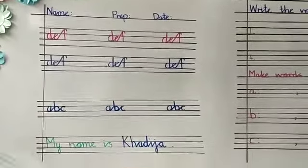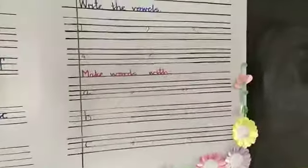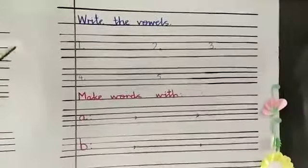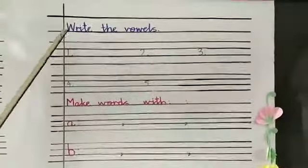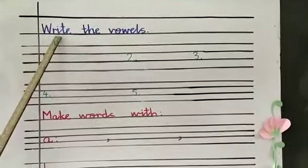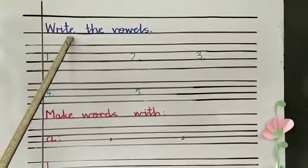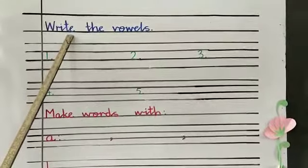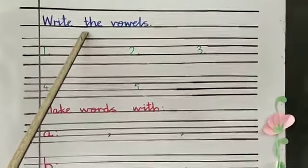Now turn the sheet. This is the other side. Look at the board. W, R, I, T, E — write. T, H, E — the.